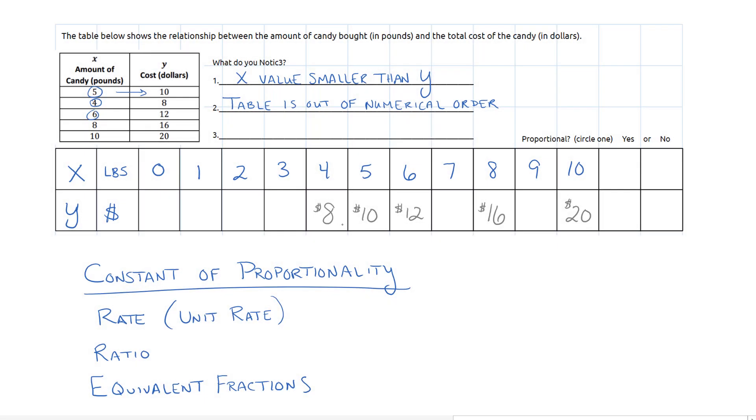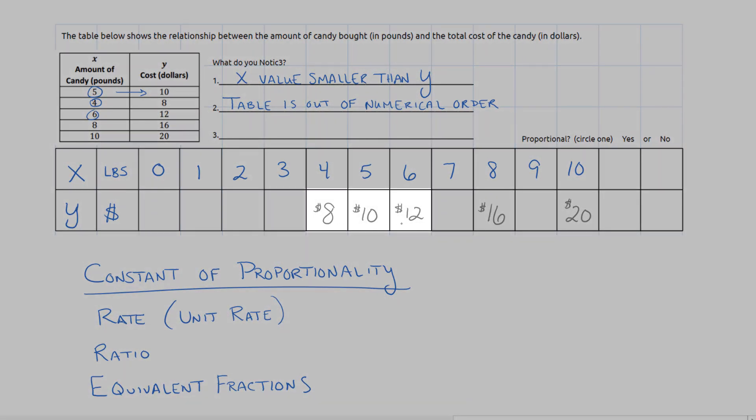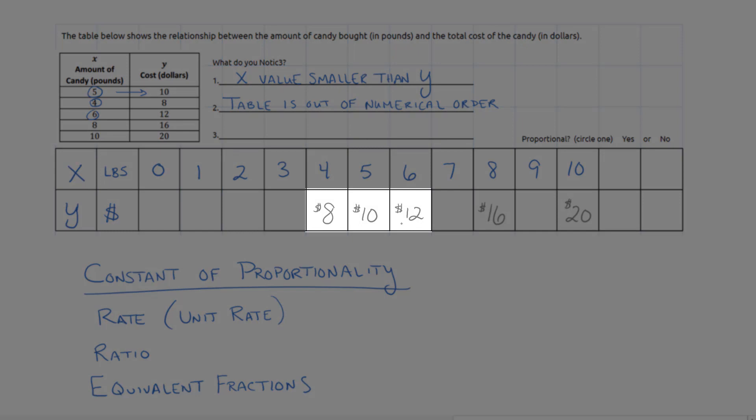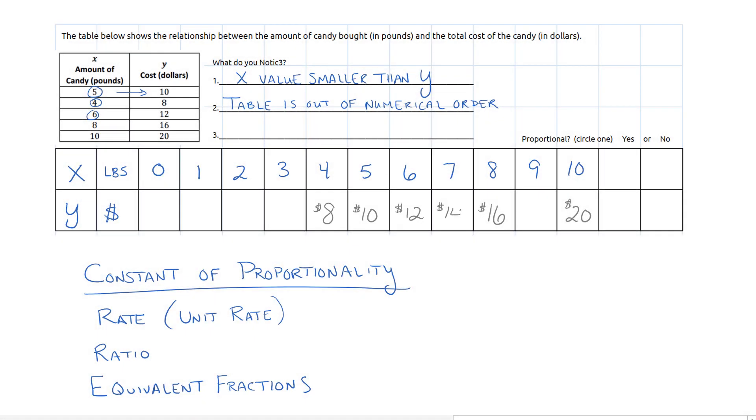And I think that we can see right in here, eight, ten, twelve, looks like they're counting by twos. So if I continue that pattern of counting by twos, fourteen, sixteen, eighteen, twenty, I can kind of fill in the rest of the table. And if I do it counting backwards, two less of eight would be six, four, two, and obviously if I'm not buying any candy, it's not going to cost me anything.